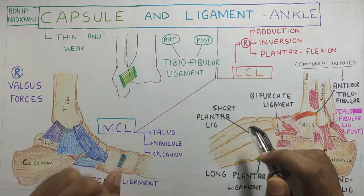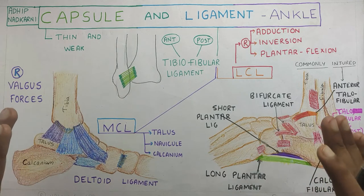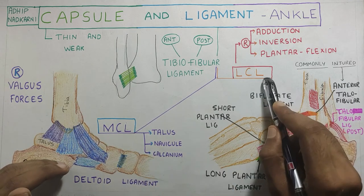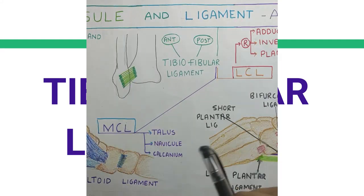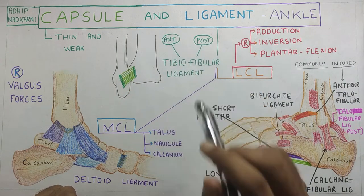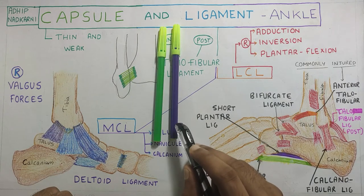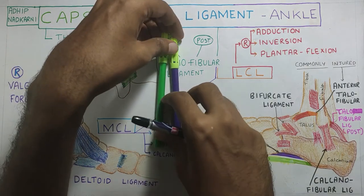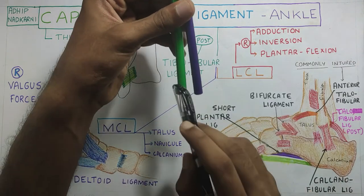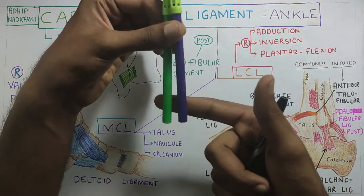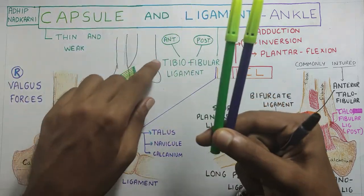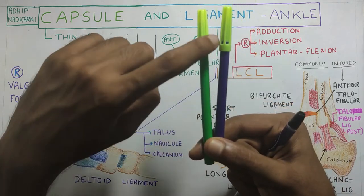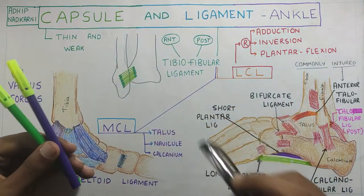The ligament is divided into three parts. There is the MCL ligament, the LCL ligament, and then there is the tibiofibular ligament. The tibiofibular ligament connects the tibia to the fibula and it has two parts — anterior and posterior. The anterior part covers from the front and the posterior part from the back, providing stability to this joint. Apart from the tibiofibular ligament, there is also the tibiofibular membrane which provides stability to this joint.